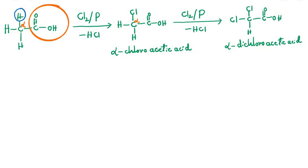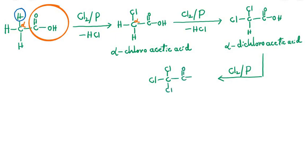If alpha-dichloroacetic acid is further treated with another molecule of chlorine in the presence of red phosphorus, one more substitution occurs, giving Cl₃C-C(=O)-OH. The name of this compound is alpha-trichloroacetic acid.